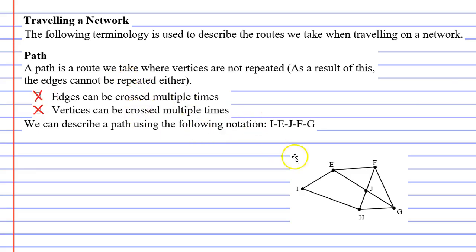We'll follow the path written below, starting at I and finishing at vertex G. We go from I to E, then from E to J, then from J to F, and from F to G. You'll notice that when we followed this path we did not cross any vertices more than once and we didn't cross any edges more than once either.